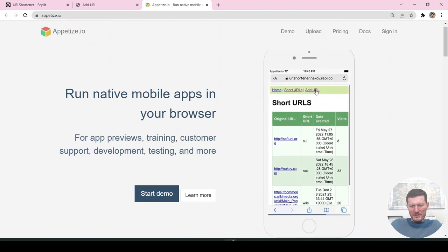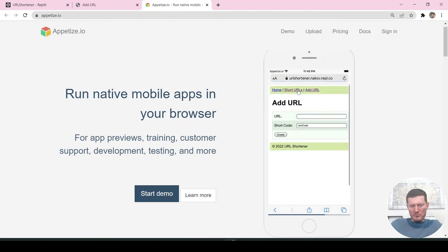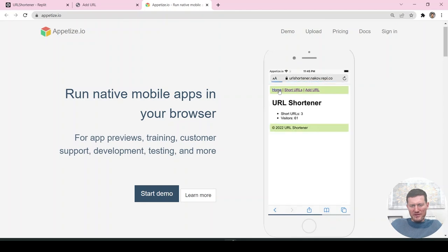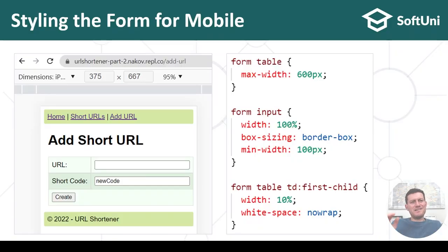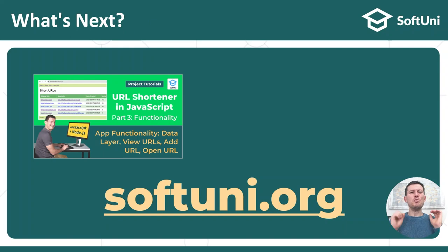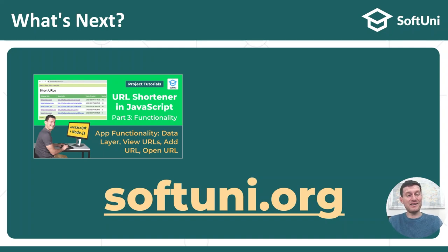We have the app rendering correctly on iPhone. I think we are done with styling for mobile. We reach the end of this second part of the URL shortener JavaScript project tutorial. The next part three is coming soon so be patient. It will show you how to implement the app functionality, the data layer, the view URLs page, the add URLs page which holds the form UI, submission logic at the server side, and open URL functionality with counting the visits for each URL.